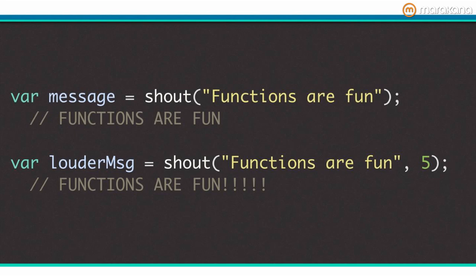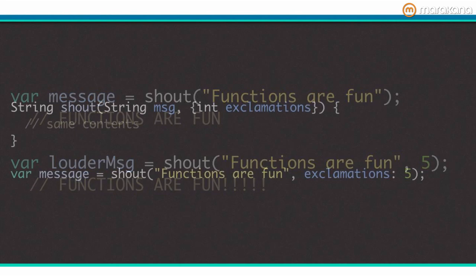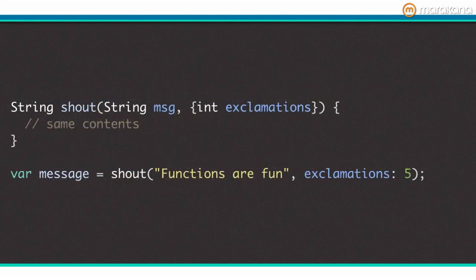Luckily, Dart has a solution for this too. You can make methods even easier to read by using optional named parameters. Here's an example. I think adding a simple name to the parameter makes it obvious what is going on. To define optional named parameters, wrap the parameters in curly braces.